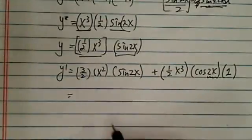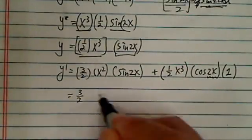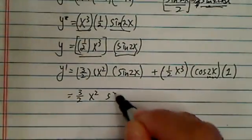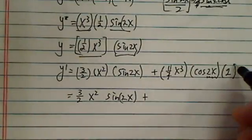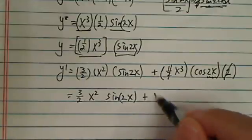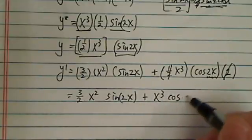Now let's simplify. (3/2)x² sin(2x) plus - the 2 and 1/2 cancel - x³ cos(2x).